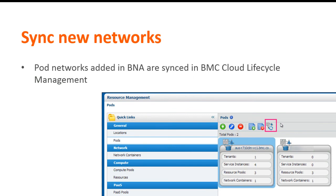Whenever you create new networks in a pod in BMC Network Automation, these networks must be synced in using BMC Cloud Lifecycle Management for them to be visible and available for provisioning. While creating a new network, ensure that you add all required nodes before you perform the sync pod operation. You can only synchronize new networks or new nodes which you add in BMC Network Automation. Any changes made to the pod that do not involve adding new networks or nodes are not synchronized.